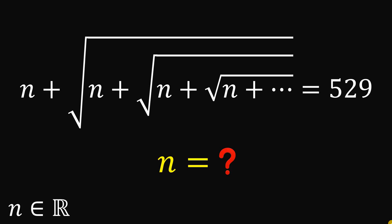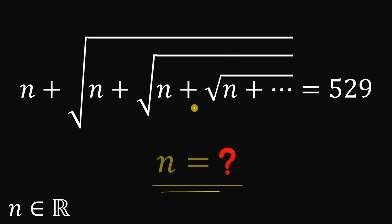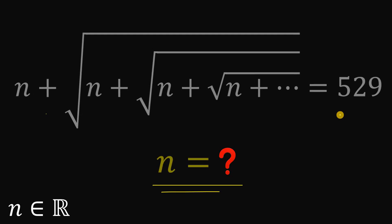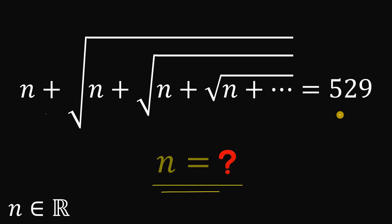For today's video we will answer a suggested problem coming from one of our followers. The question goes like this: solve for the real value of n that satisfies this equation — n plus square root of n plus square root of n plus square root of n until infinity equals 529. You can pause this video if you want to give this problem a try.